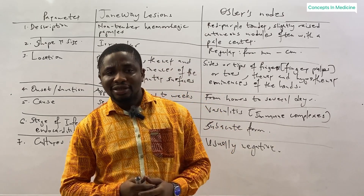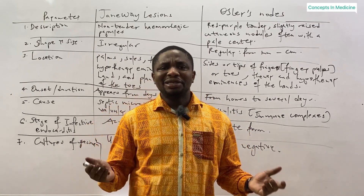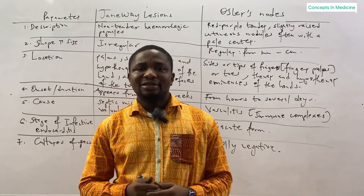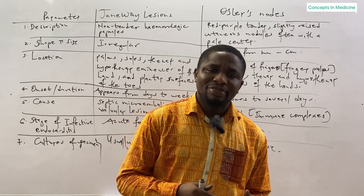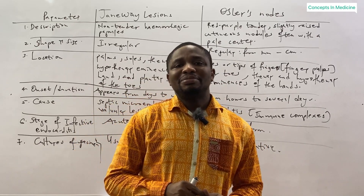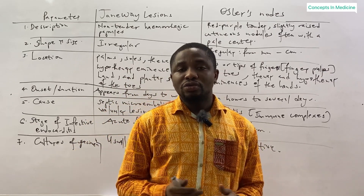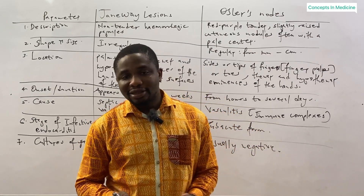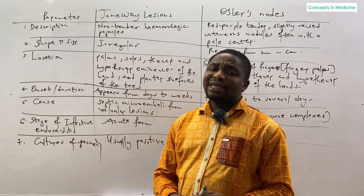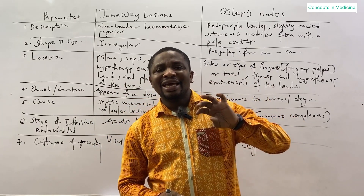You should know that Janeway lesions and Osler's nodes are signs that can be seen on the hand in a case of infective endocarditis, but there are significant differences between the two signs. So let's look at them.